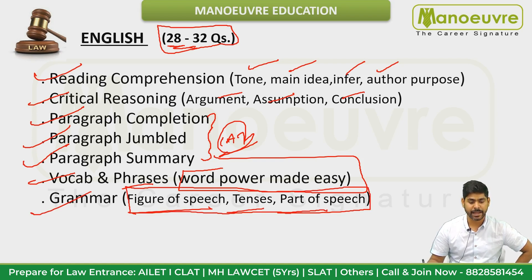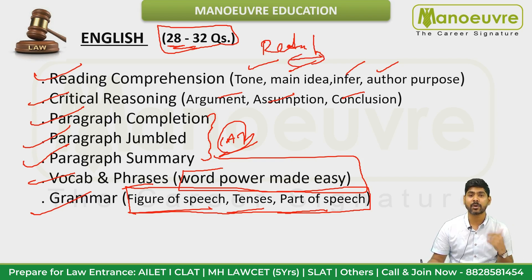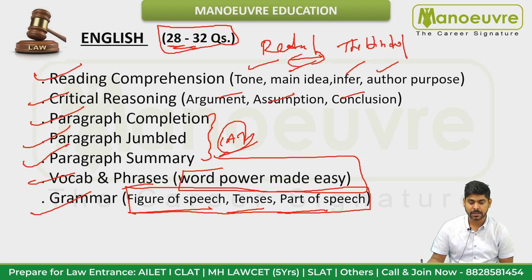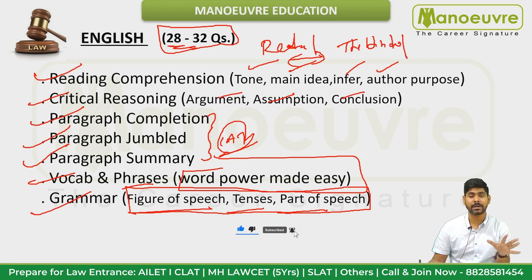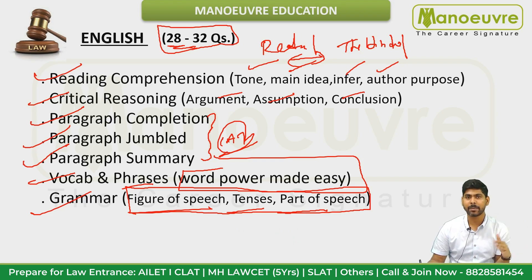If you want to improve your score, start reading. First of all, read The Hindu newspaper. You can read it on screen, on your laptop, or as a hard copy — just don't read it on mobile if possible. Use a computer or hard copy for best results.